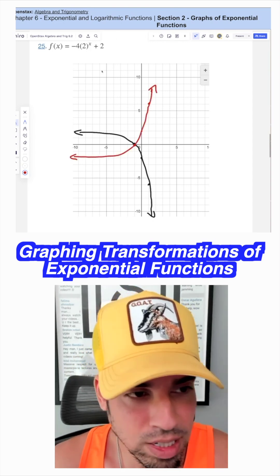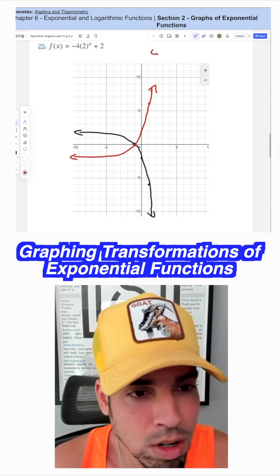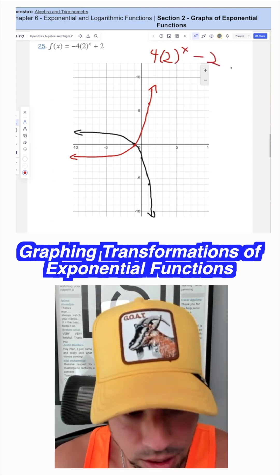And once again, to reflect across the x-axis, you just basically multiply the entire function by negative 1. So it becomes 4 times 2 to the x minus 2. Everything gets flipped.